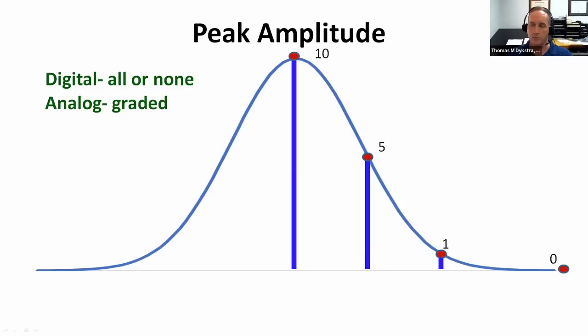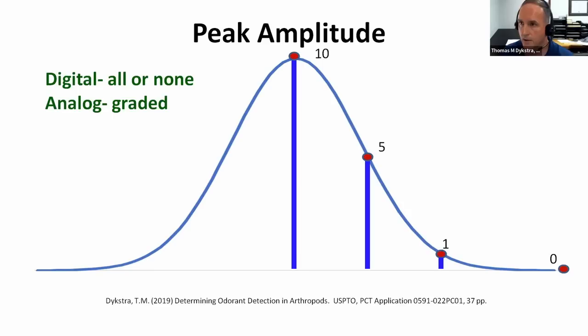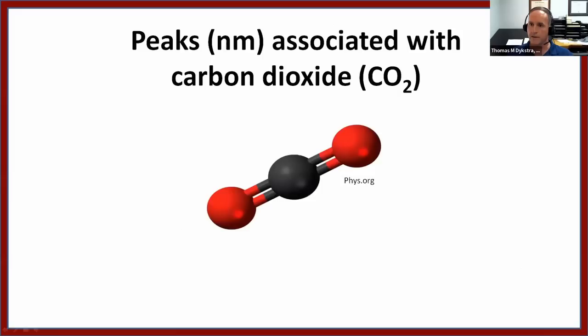For anyone who wishes to read 37 pages on how determining odor detection in arthropods is done, that information is available. To begin looking at resonance, I think the easiest starting point for insects is carbon dioxide. It is a known odorant detected by a large number of insects, and because of the simplicity of the molecule — it only contains two atoms — it seems a logical place to start.